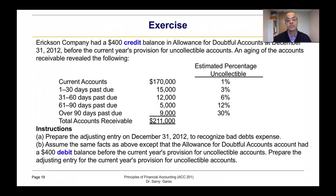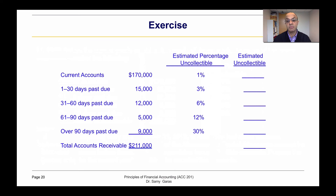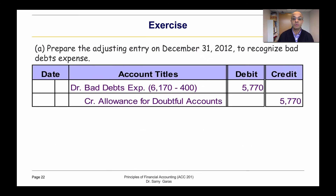In this exercise we have a credit balance of four hundred, which means we need to subtract it. We have due balances from accounts receivable with their estimated uncollectable percentages. We need to prepare the adjusting entry on December 31st to recognize bad debt expense. We take the percentages multiplied by the amounts to get the totals; the estimated uncollectable amount is 6,170. Since we have a credit balance of 400, we subtract it to get the new balance of 5,770, and we debit bad debt expense and credit allowance for 5,770.